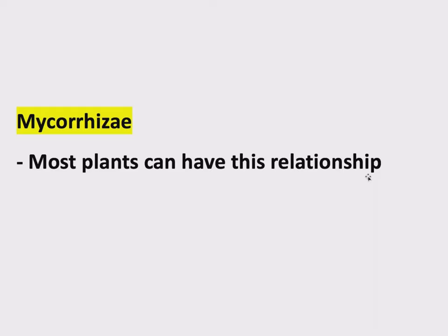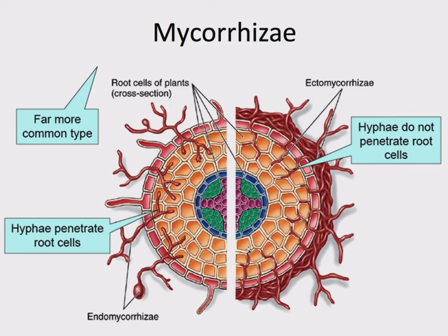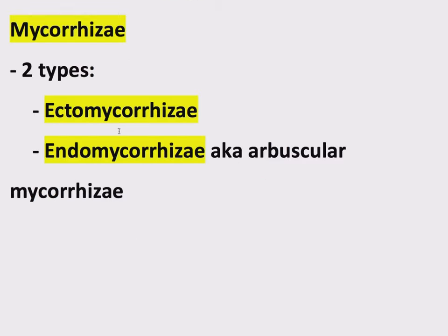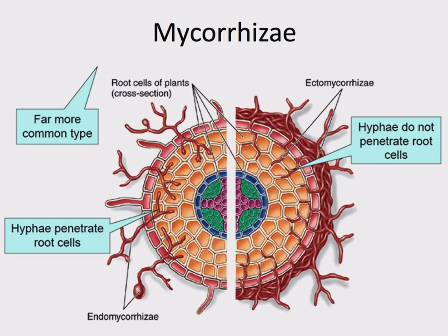There are two types of mycorrhizae. Ectomycorrhizae is when the fungal hyphae do not penetrate the root cells of the plant — they sort of go around. The other type, also in the key terms, is endomycorrhizae, also known as arbuscular mycorrhizae, which is when the fungal hyphae do penetrate the cell walls of the root cells and get more in there. Both of these are in the key terms. Arbuscular mycorrhizae were mentioned before when we were talking about the glomeromycota. So that's mycorrhizae — one type of symbiotic relationship involving a fungus.